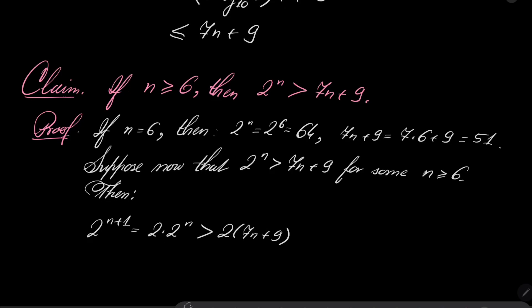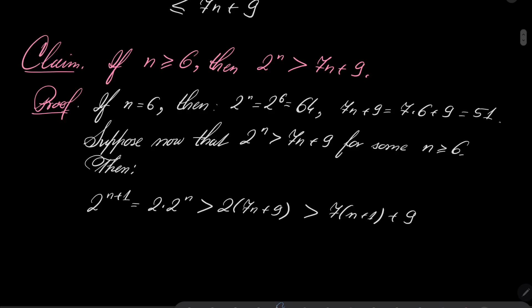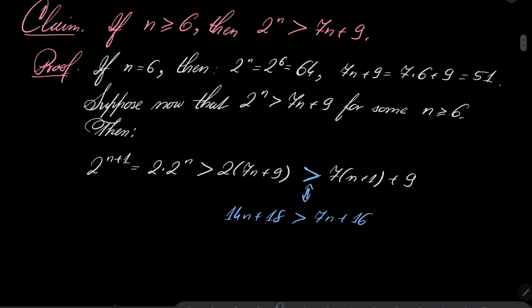And I claim that this is greater than 7n plus 1 plus 9. And how to justify this second inequality? Well, notice that this is equivalent to saying that 14n plus 18 is greater than 7n plus 16, and this is of course true, because 14n is greater than 7n and 18 is greater than 16. So this is true. And this closes our inductive proof of my claim.